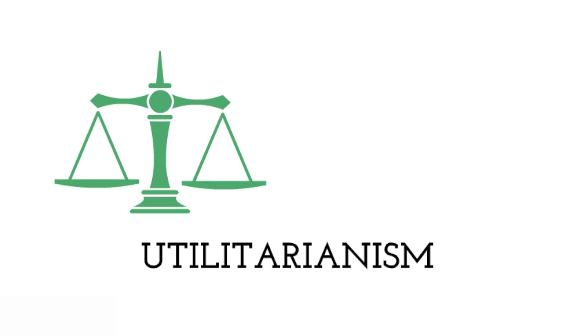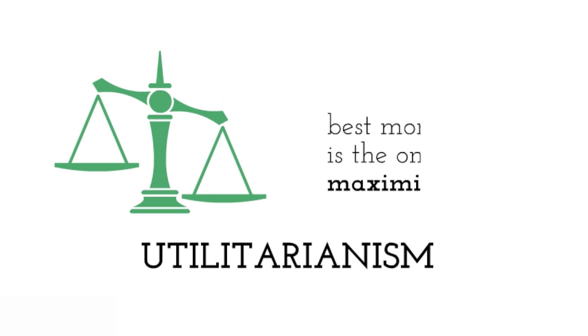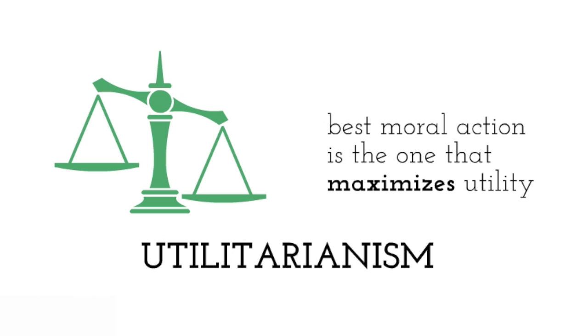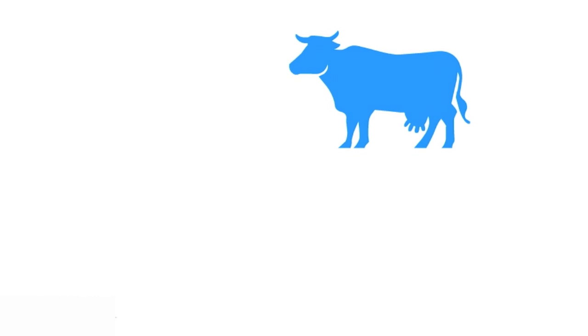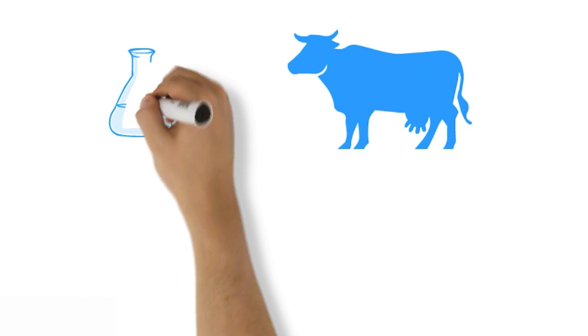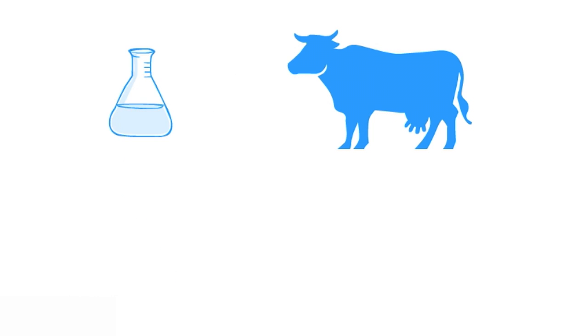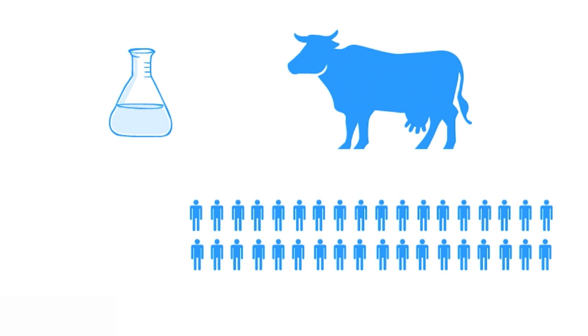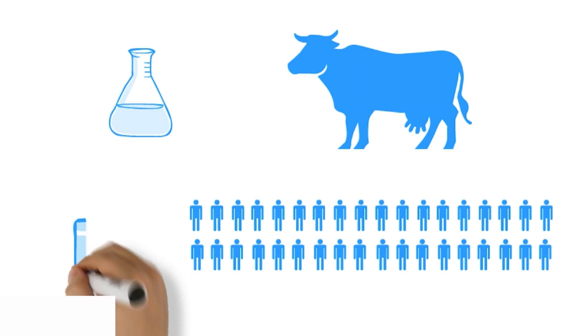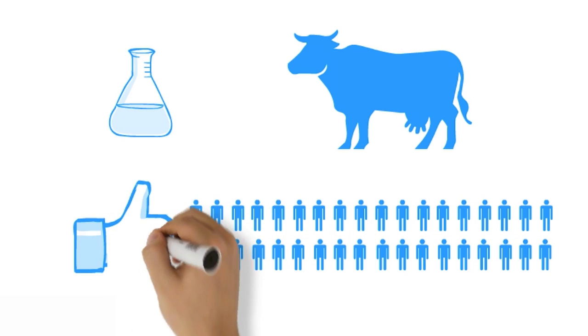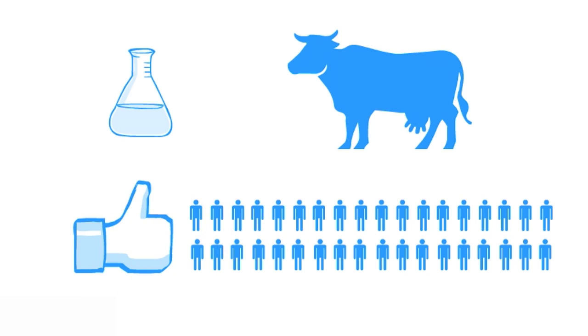Those who are for transgenesis argue on the basis of utilitarianism, meaning that the best moral action is one that maximizes utility. For example, if we were to do an experiment on a cow — one that might harm the cow — but it ultimately brings positive results for many more of another species, such as humans, then that benefit outweighs the harm done to the cow.